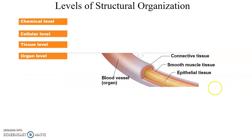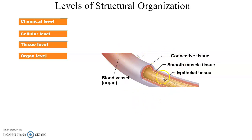At the organ level, organs are made up of two or more different kinds of tissues — that is the official definition of an organ. For example, a blood vessel has an inner lining of epithelial tissue, then smooth muscle tissue, then outer connective tissue — three different tissues — so blood vessels are considered organs.